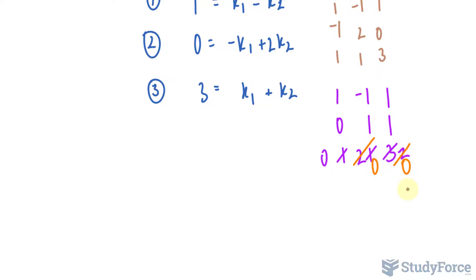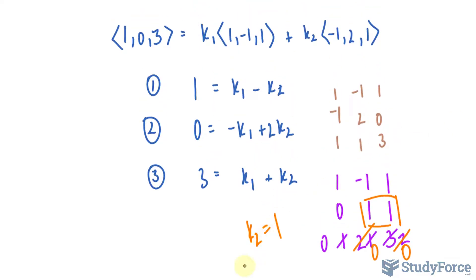We can easily solve now for k₁ and k₂. k₂ can be found using this relationship. k₂ = 1. And substituting that into any one of these equations, I can solve for k₁, and we end up with k₁ = 2. So we actually come up with an answer for k₁ and k₂.